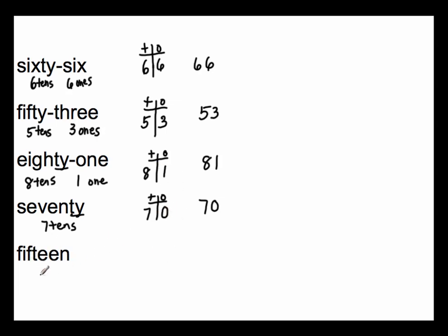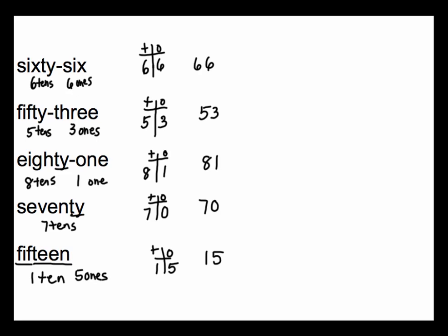And now I have fifteen. Remember, any word that ends in T-E-E-N tells us that we have one ten, and the beginning part tells us how many ones we have — so I have five ones. Setting up a place value chart, I have one ten and five ones. The number for fifteen is written as the digits 1 and 5. I hope that you enjoyed and learned how to change from numbers to number words and back again, and how this all relates to place value. Have a good day.